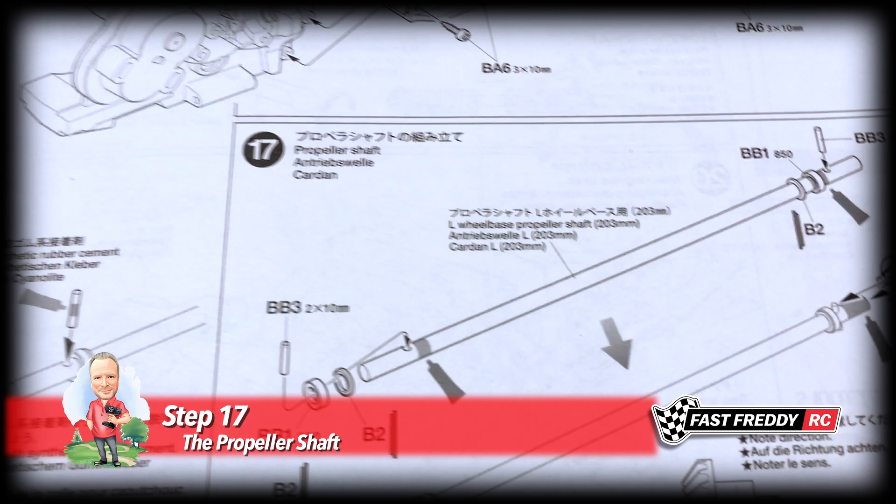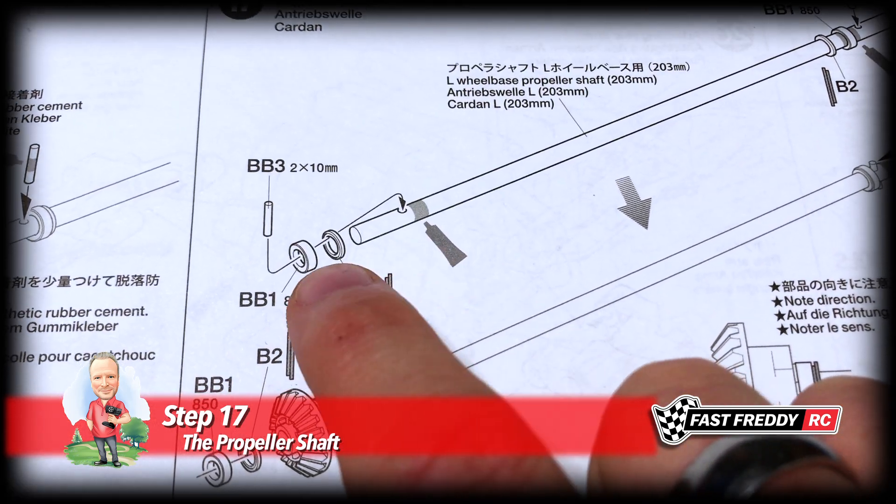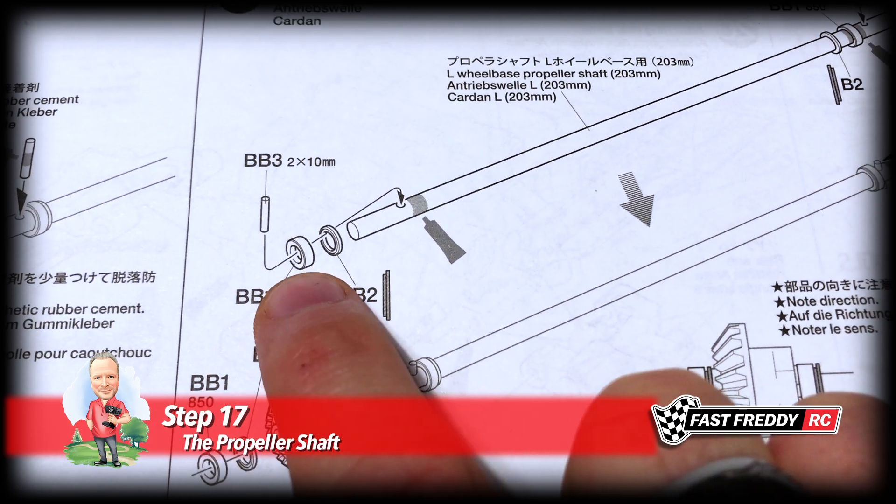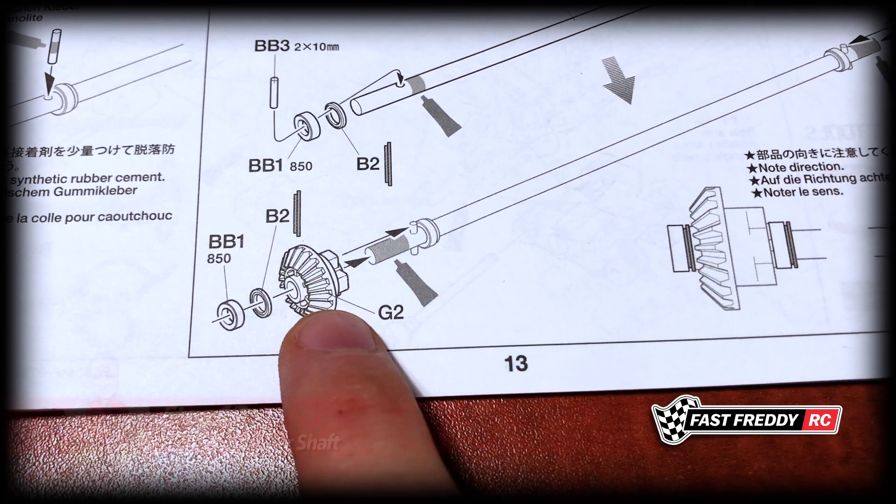It's a pretty heavy duty one and you can see that we're going to need to grease some stuff up here, put a bit of these little bushings, and then there's the BB-1 bushing which I'm going to replace with full ball bearings, and then we've got the gears.